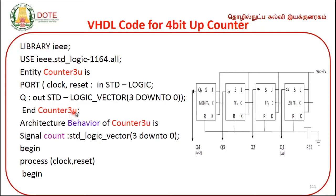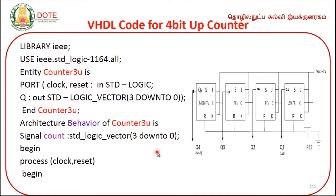After the entity declaration, we write the architecture body. The architecture name is 'behavior', which is a keyword. It is associated with the entity name 'counter3' using the keyword 'is': architecture behavior of counter3 is. Then inside, we declare a signal.